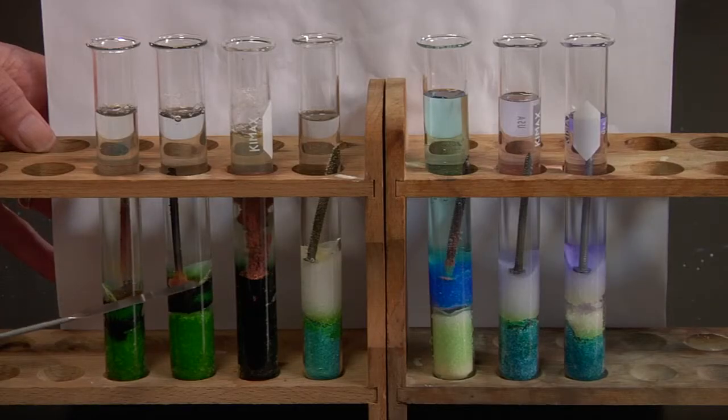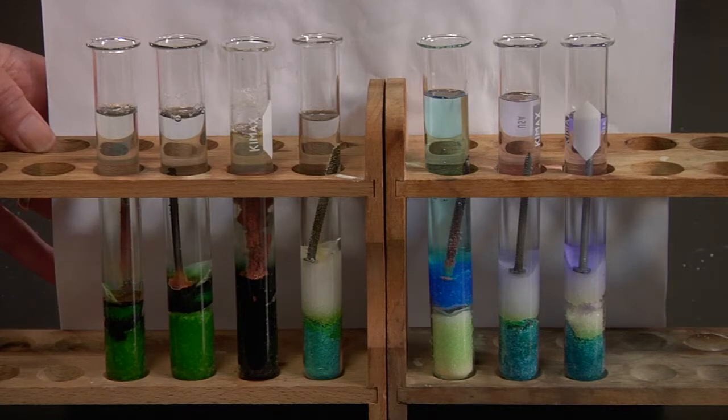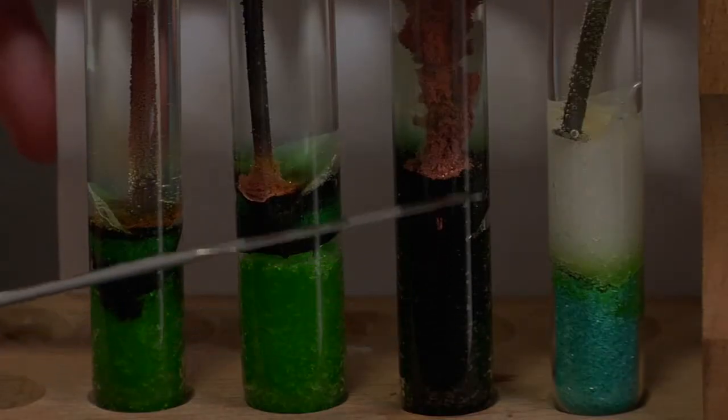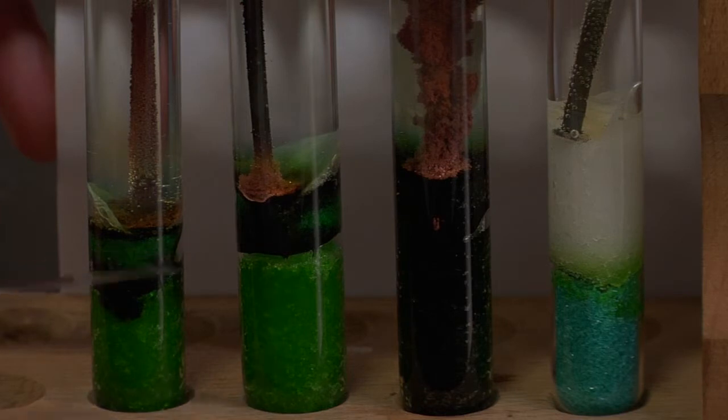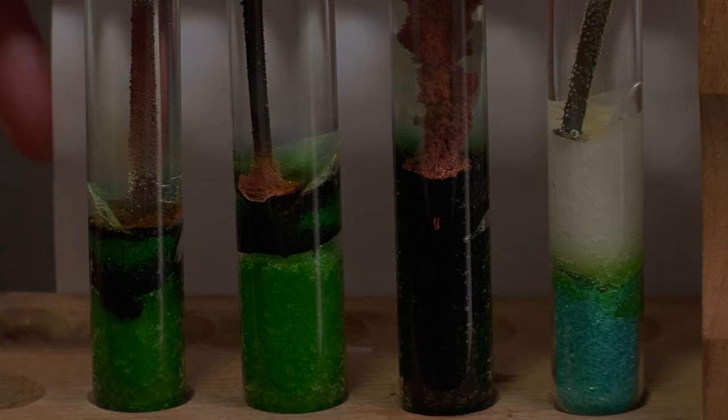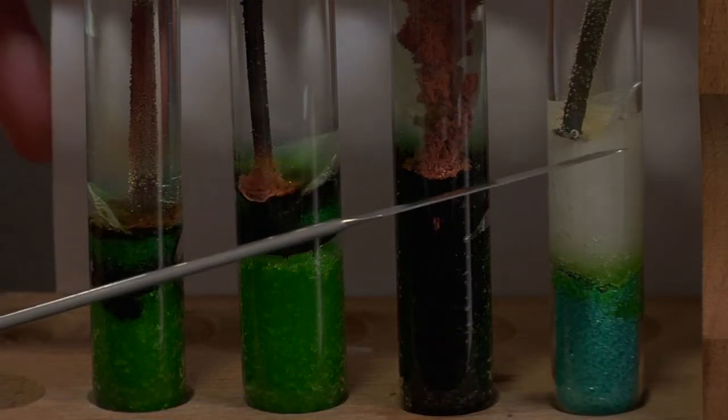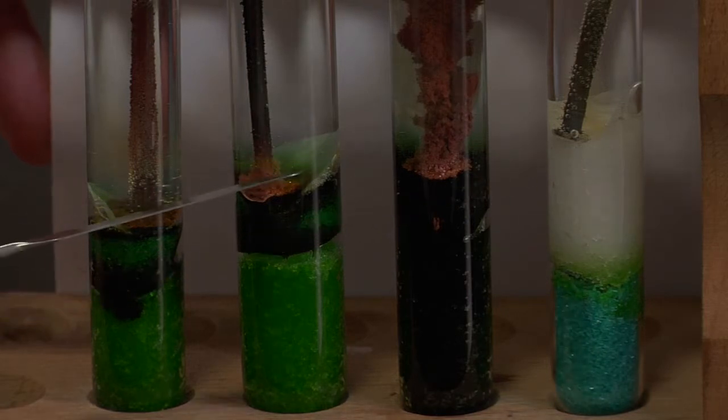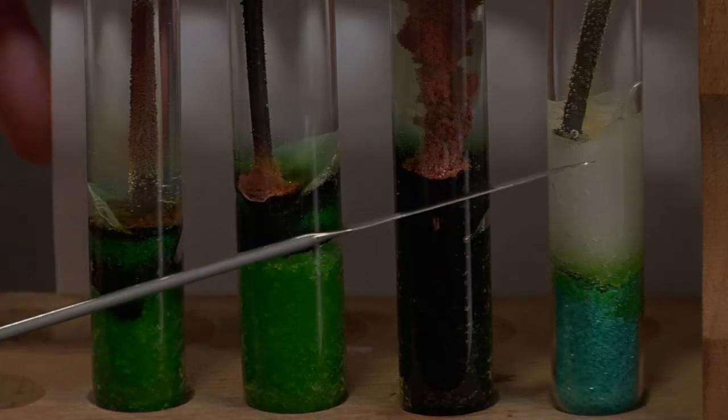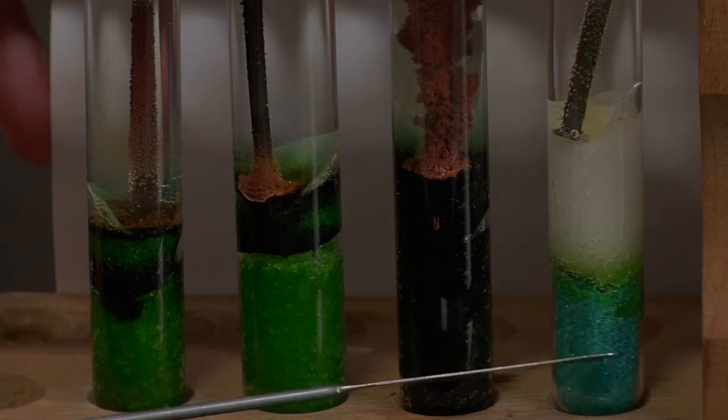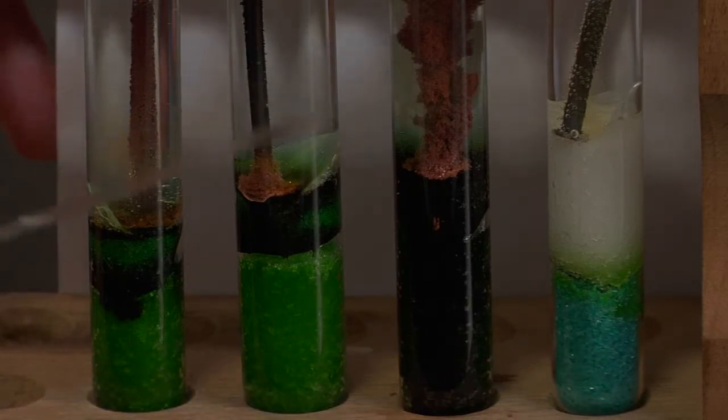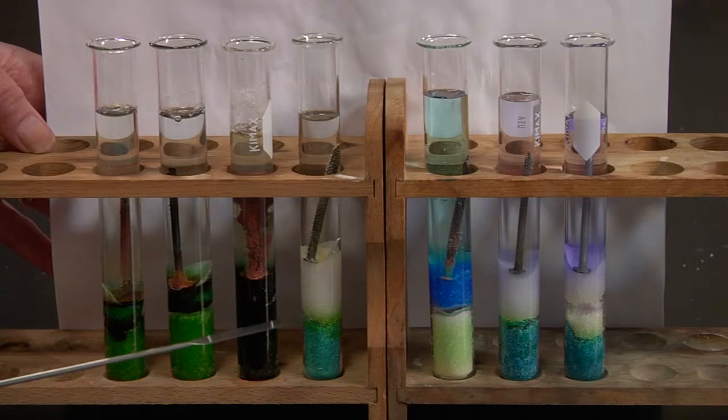These two, the only difference was galvanized and non-galvanized. The difference between this one and these two was the nail was pointed down instead of the head being pointed down. In this one, the only difference is the sodium chloride was on the top and the copper chloride was on the bottom. So we're beginning to see some interesting patterns in the copper chloride test tubes.